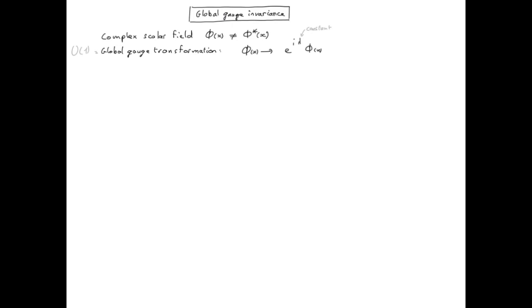So this is the symmetry of the Klein-Gordon Lagrangian. But because the field is complex, the Lagrangian depends not only on phi but also on phi star and their derivatives. Therefore we need to specify how phi star also transforms under the global gauge transformation, and that's obviously the complex conjugate of this expression.